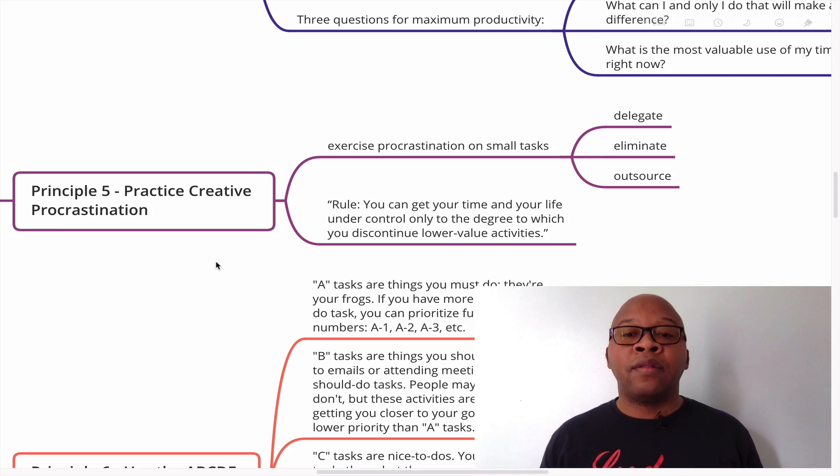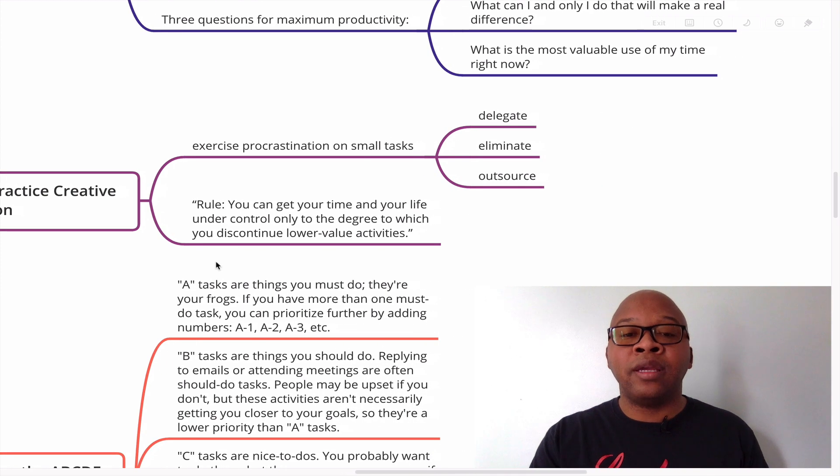So there are three things that you can do. You can delegate, you can eliminate, or you can outsource. The rule is you can get your time and your life under control only to the degree to which you discontinue lower value activities. A lower value activity would be watching television, or checking social media, or constantly checking your email. All of these things are low value activities.